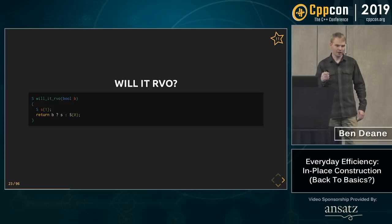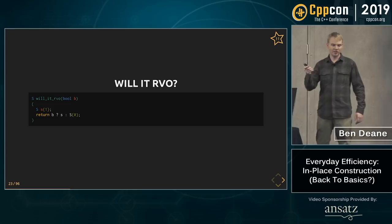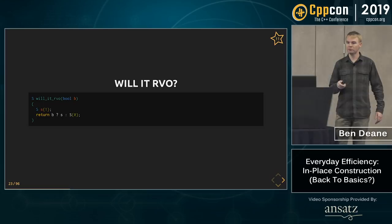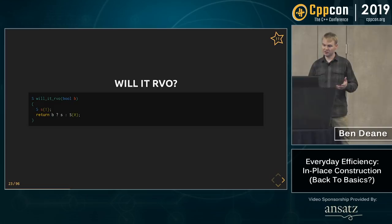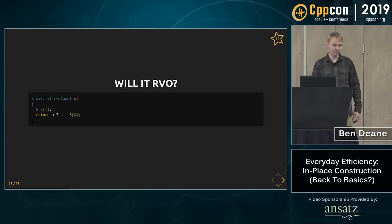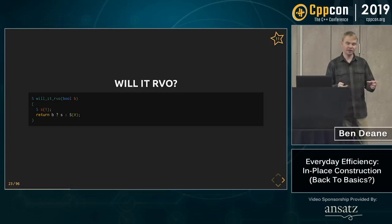How about this one? No — we're not returning the name of a variable, and in fact we're not returning the right type, because the ternary operator in this case will produce an lvalue reference. So we have to copy here — we can't even move. This definitely defeats RVO and you don't even get the move.